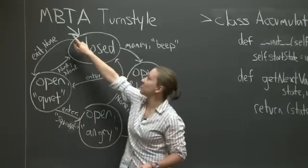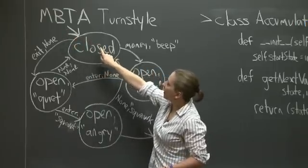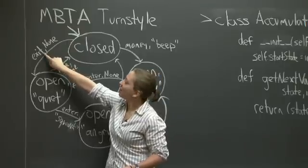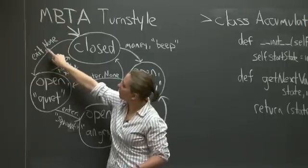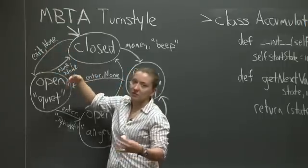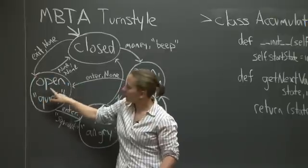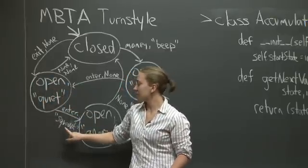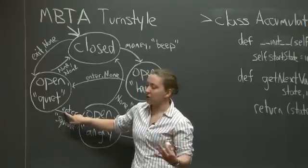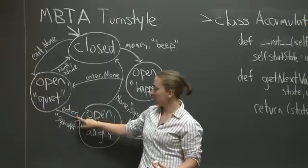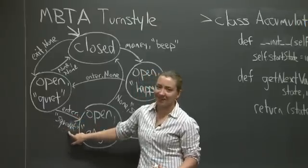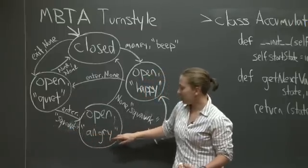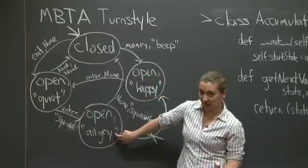So let's say I walk up to the turnstile and somebody else interacts with the turnstile by exiting. In this case, exit is the input. None is the output. The turnstile doesn't make any noise. And the turnstile is open. If at that point, I interact with the turnstile by entering, it's going to make noise, which is the output.